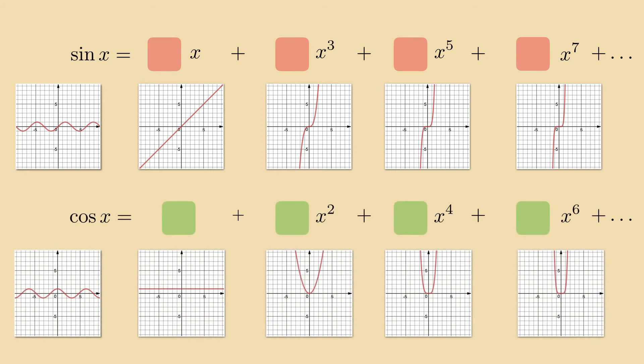We make the same setup for the cosine, only now the graph is symmetric around the y-axis, therefore we only pick from the even powers of x whose graphs all have the same mirror symmetry. The goal is now to find the coefficients in both series.